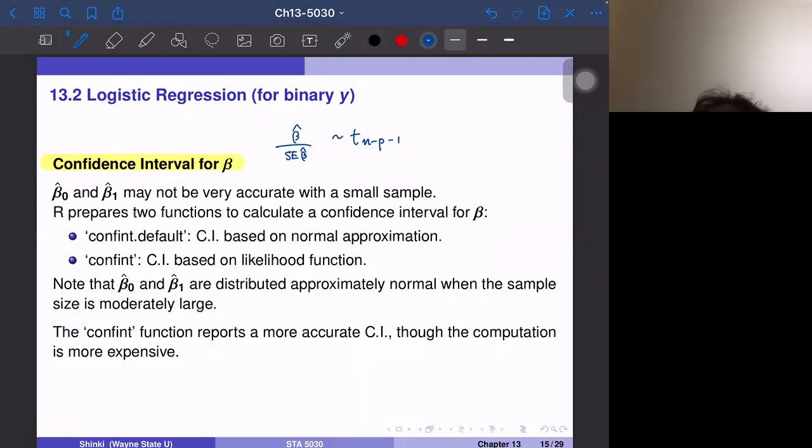One method is to rely on normal approximation. Under null hypothesis of beta equals zero, we assume beta hat follows normal distribution with mean zero. This is approximately true if sample size is large. The confint.default function uses this method.